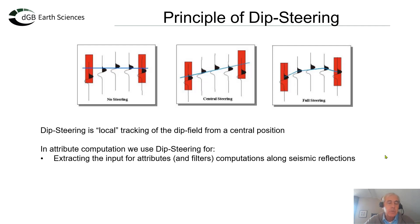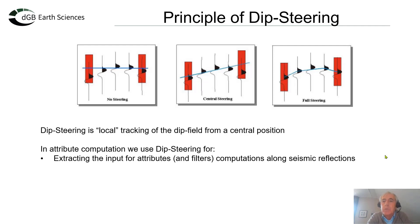In the dipsteering application, which is often expressed in the attribute engine as an optional parameter, we find different forms of steering. If there's no steering, then obviously we're just extracting the information horizontally. Central steering means we are following the dip from the central position, that is the evaluation position. In full steering, which is the default when we do dip steering, we're following the dip in three dimensions — basically a kind of local horizon tracking using the dip field — and we are extracting information along the seismic reflectors.